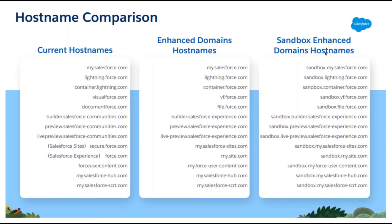Sandbox enhanced domain hostnames are sandbox.file.force.com. For general URLs, sandbox is added for sandboxes. The production instance uses my.salesforce.com and document.force.com, while file.force.com and salesforce-community.com URLs follow the same sandbox pattern.